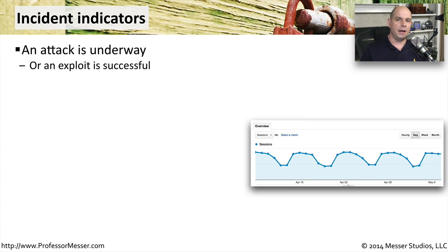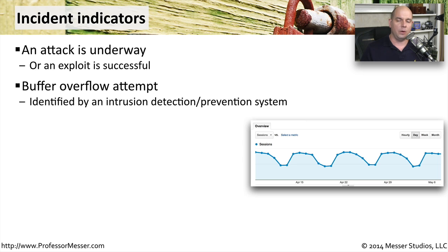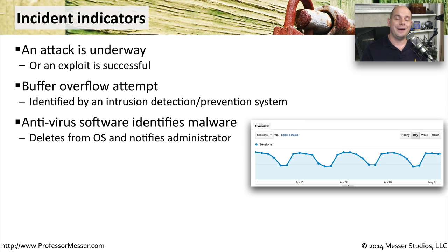There are a number of things you can monitor to see if an attack might be underway. The sooner we can stop the attack, the less damage is going to occur in your network. One way is to look for buffer overflow attempts, which is a very common way to take advantage of bad software in an application or operating system. You can look to intrusion prevention systems to provide information about buffer overflows, as they have signatures specifically designed to look for these on the network and inside an operating system. On the devices themselves, you can constantly update your antivirus and anti-malware signatures so they may also identify malicious software trying to execute in the operating system.